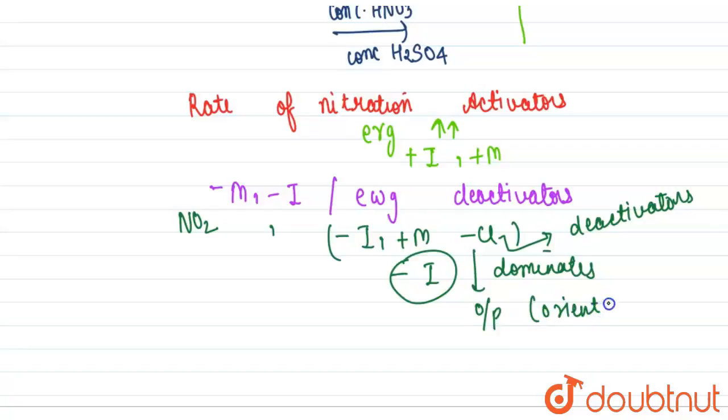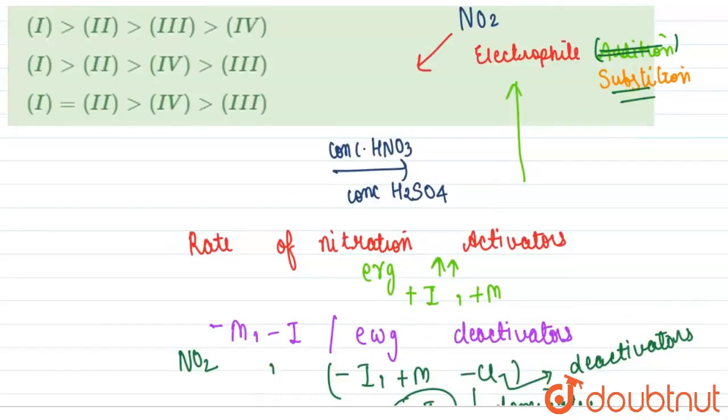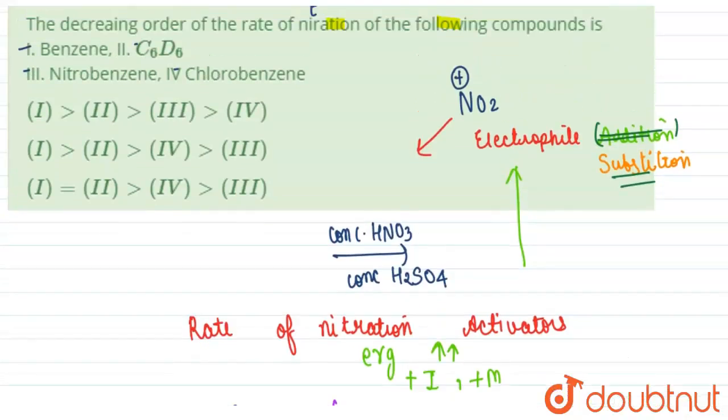Even though nitration will occur at ortho and para positions, it is still a deactivator for electrophilic substitution reaction. And finally, there is no isotopic effect, no kinetic isotopic effect.